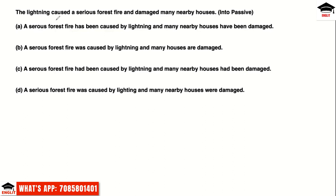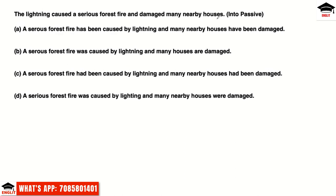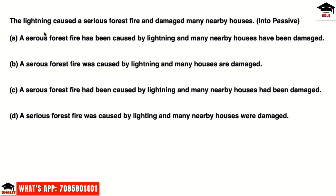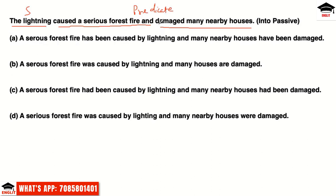Next question: 'The lightning caused a serious forest fire and damaged many nearby houses' — make this passive. This is a simple sentence: 'the lightning' is the subject; 'caused a serious forest fire and damaged many nearby houses' is the predicate with two parts. Since both verbs share the same subject, we can make each part passive separately. For past tense passive: 'was/were + past participle'. So: 'A serious forest fire was caused... and many nearby houses were damaged by the lightning.'